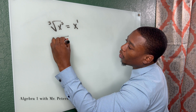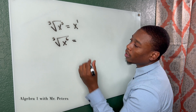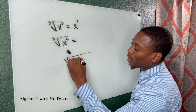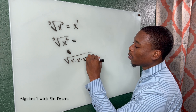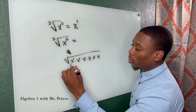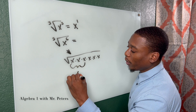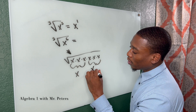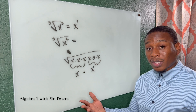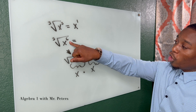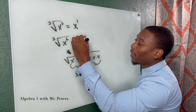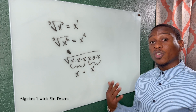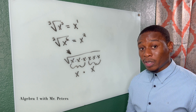For the cube root of x to the sixth power, let's write it out: x times x times x is the first triplet giving one x, and another x times x times x is the second triplet giving another x. So the cube root of x⁶ equals x squared. Dividing 6 by 3 also gives x squared — that's how many triplets we get.